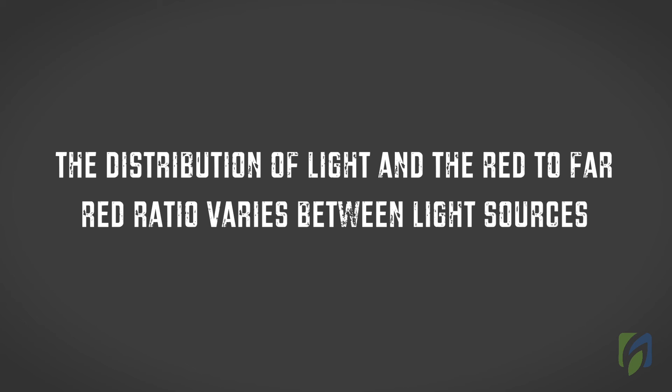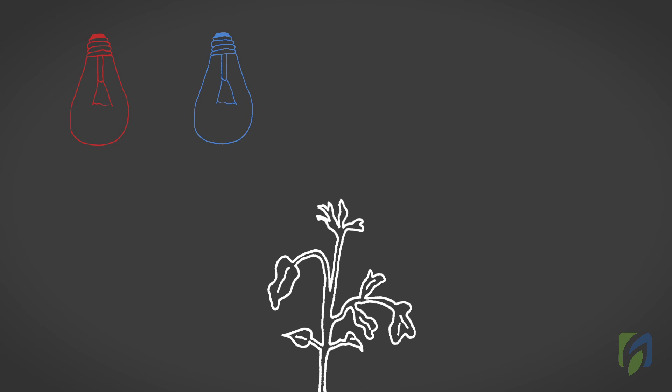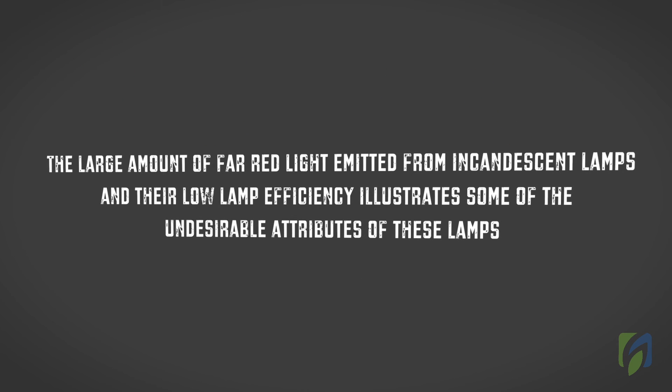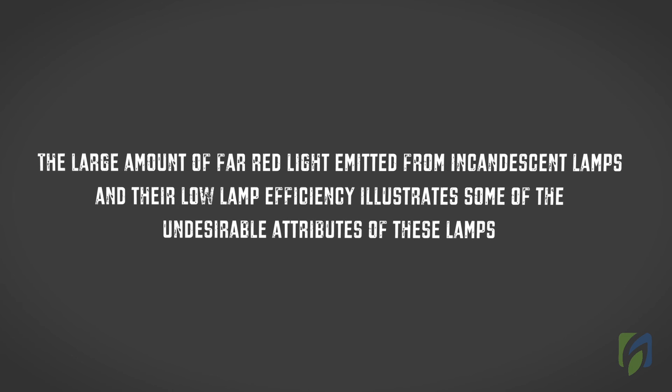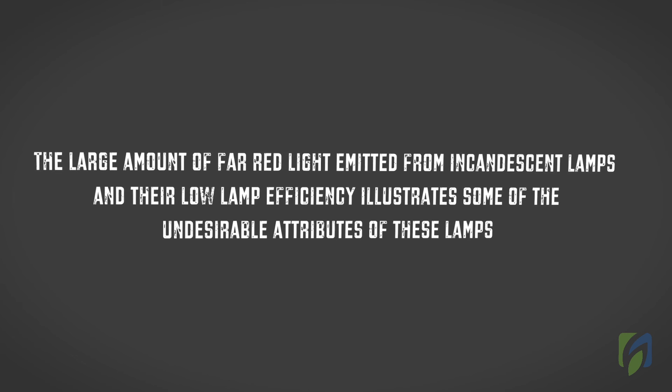The distribution of light and the red to far red ratio varies between light sources. Knowing these values can be useful to predict the impact of different light sources on plant growth. The large amount of far red light emitted from incandescent lamps and their low lamp efficiency illustrates some of the undesirable attributes of these lamps.